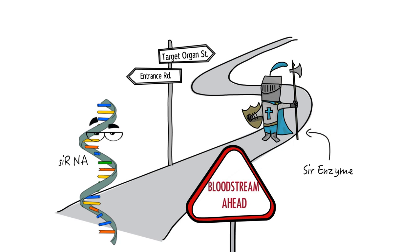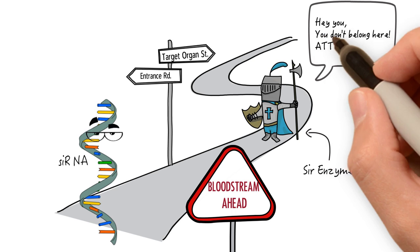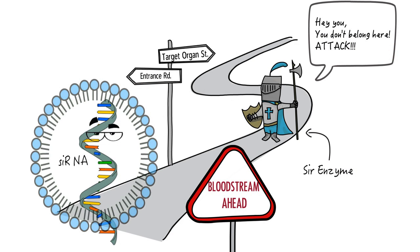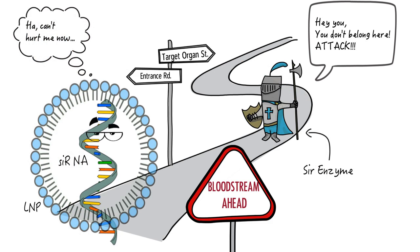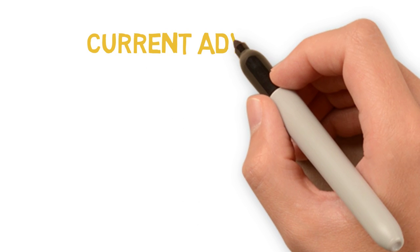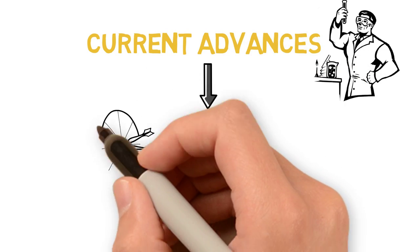One potential solution for this is protecting the siRNA in a lipid nanoparticle, or LNP. Since the pores in the liver endothelium facilitate the entry of LNPs, and LNPs are coated with a substance to help enter liver cells, much of RNAi therapies are currently targeting diseases in the liver.